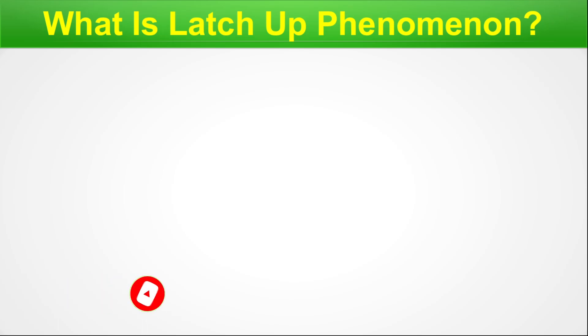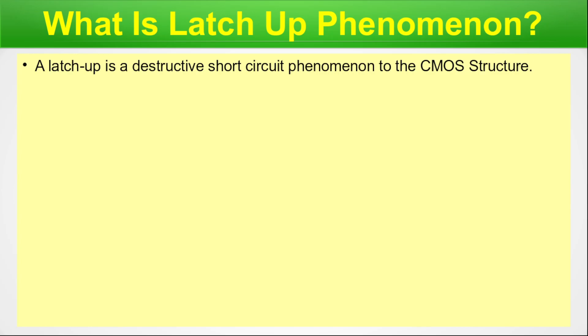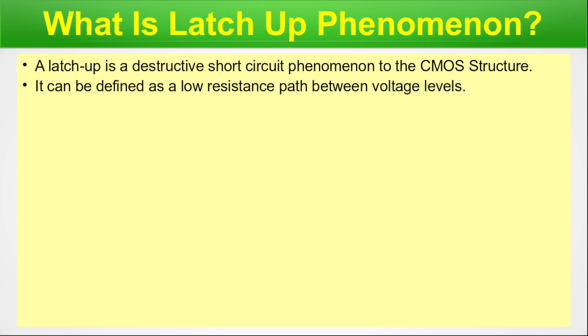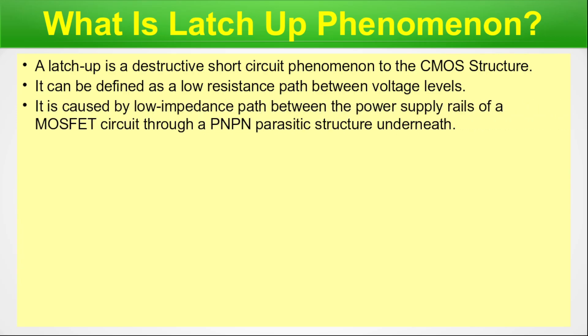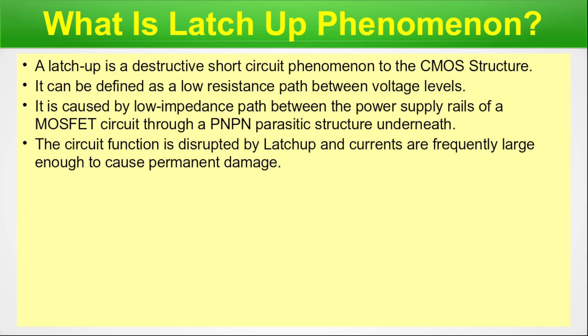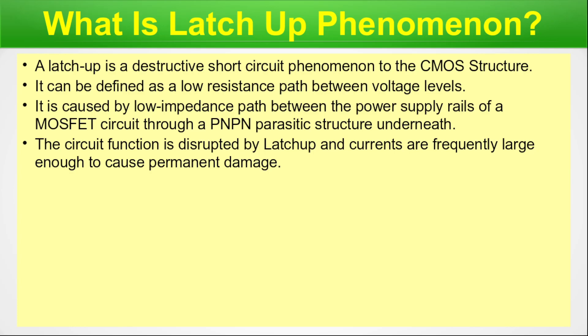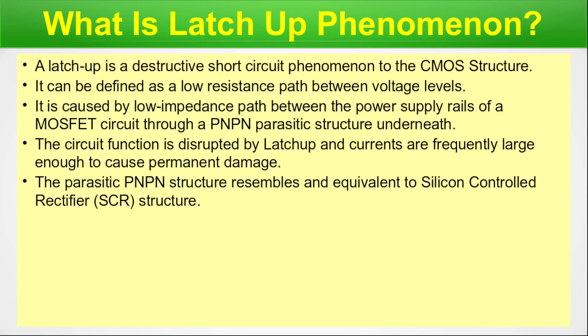What is the latch-up phenomenon? A latch-up is a destructive short-circuit phenomenon found in the CMOS structure. It can be defined as a low-resistance path between voltage levels, i.e. VDD and VSS. It is caused by a low-impedance path between the power supply rails of a MOSFET and a PNPN parasitic structure underneath, inside the silicon substrate. The circuit function is disrupted by latch-up, and currents are frequently large enough to cause permanent damage to the CMOS circuit and hence the VLSI chip.